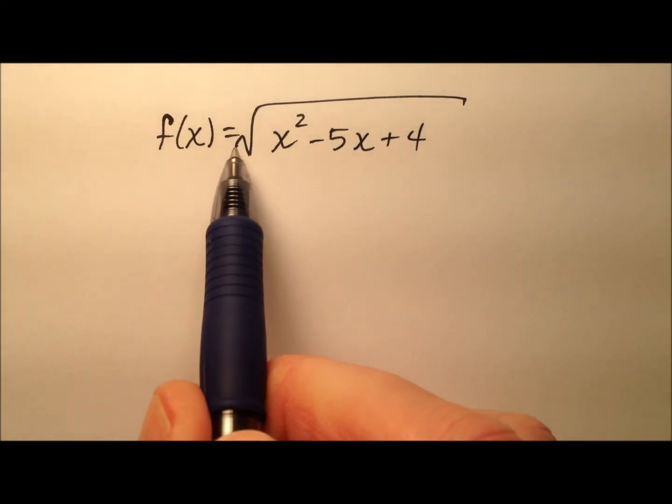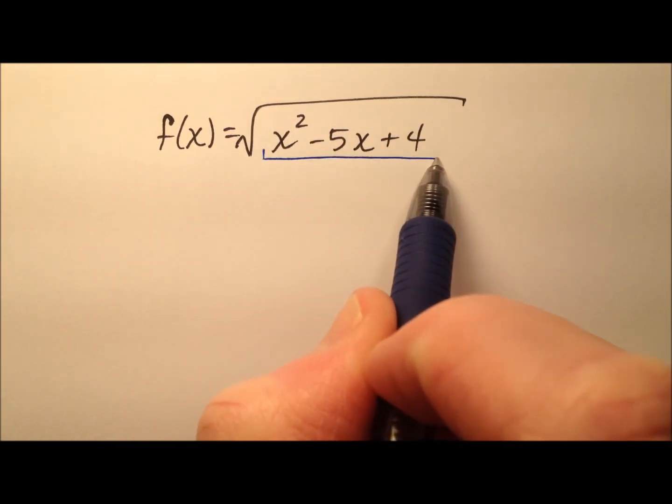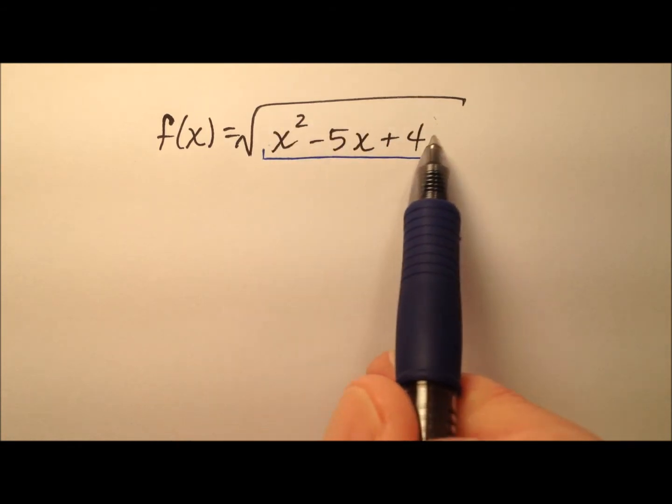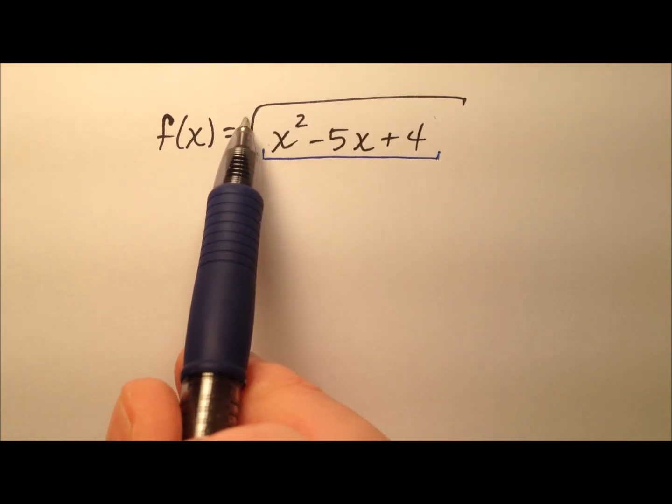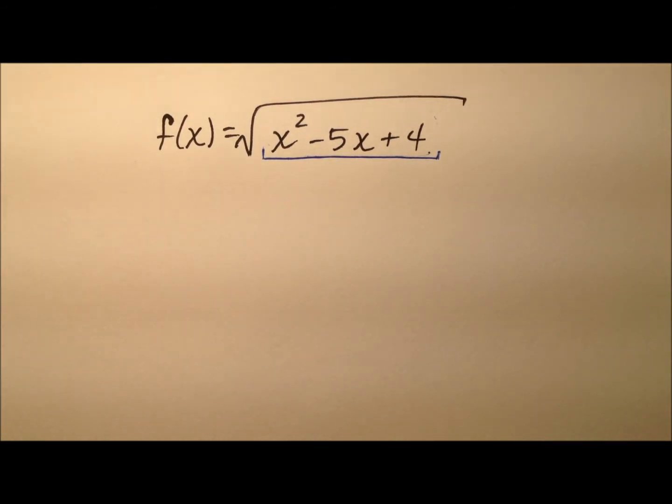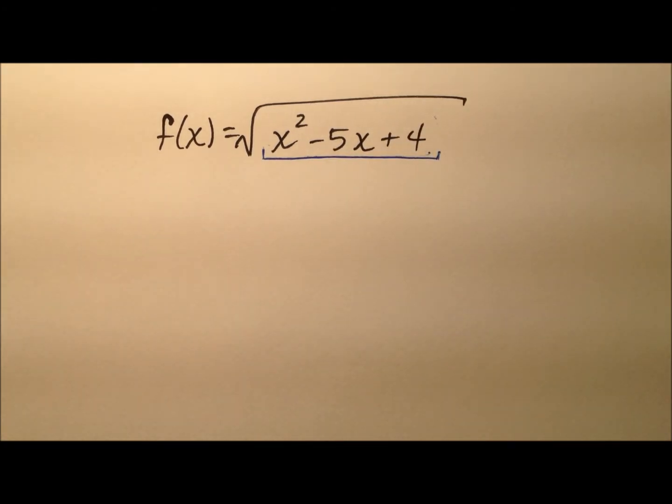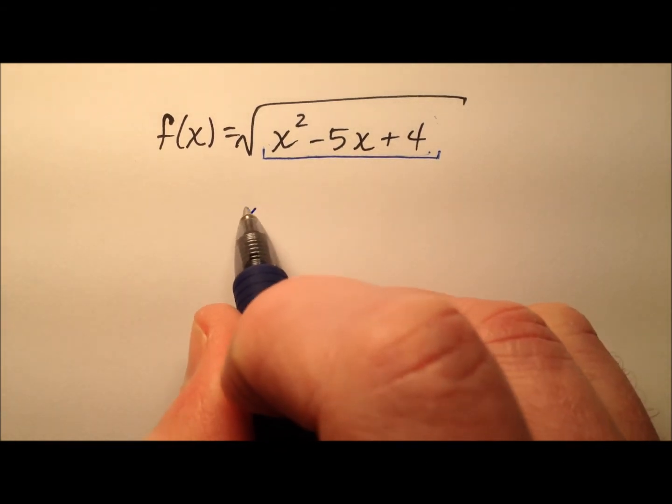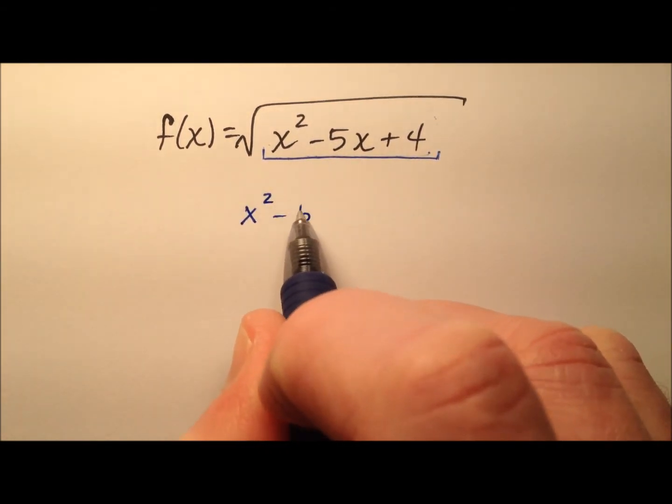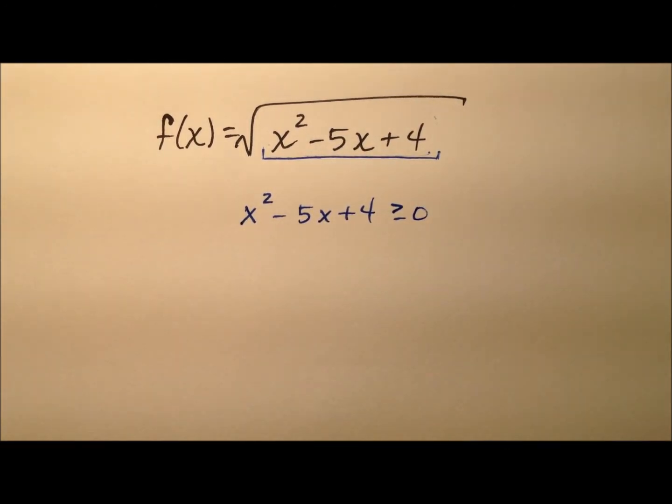Remember that when we have square roots in a function, we have to make sure that this radicand, or whatever is underneath this radical, as long as the root is even—so it's a square root—this radicand must always be non-negative. We can't take the square root of a negative number, because that's going to be imaginary, which cannot be graphed on a real number line. So we have x² - 5x + 4, and that must be greater than or equal to 0.